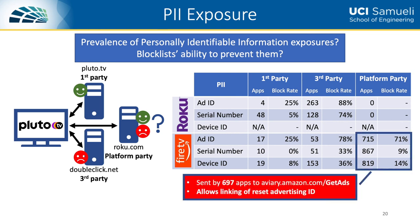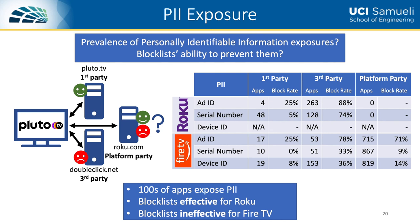Very alarmingly, we find that almost 700 apps send the advertising ID, serial number, and device ID all three in a single request to what appears to be an Amazon ATS endpoint. This effectively eliminates the user's ability to opt out of targeted advertisements by resetting their advertising ID, as it allows Amazon to relink the old and new ad IDs by joining on the static serial number. In total, we find that hundreds of apps expose PII, and the blocklists do reasonably well at preventing this on Roku but less so on Fire TV. However, the Roku numbers represent a lower bound, as we can only analyze cleartext traffic on Roku.